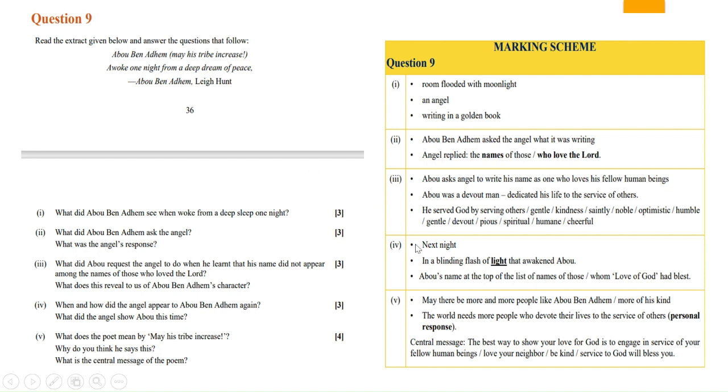Now let's move to the fifth question. What does the poet mean by 'may his tribe increase'? Why do you think he says this? So may there be more and more people like Abu Ben Adhem, more of his kind. The basic meaning is that there should be more people like him in this world.